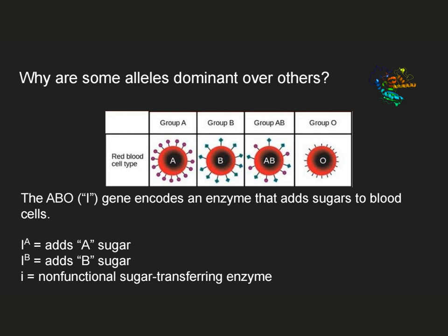This example brings us to an important point: genes can have more than two alleles. In this case, we see the IA and IB alleles, which affect the type of sugar added to a blood cell. But there is also a little i allele, which is a non-functional sugar-transferring enzyme — just like the little R allele in peas, it's a copy of this enzyme that doesn't work at all. Individuals with genotype little i, little i end up being blood group O, meaning they do not have sugars on their blood cells at all.